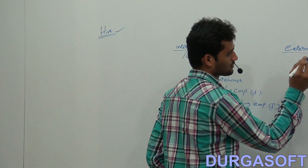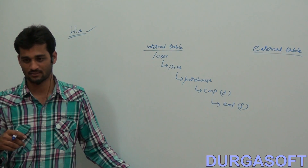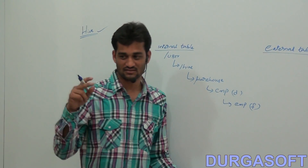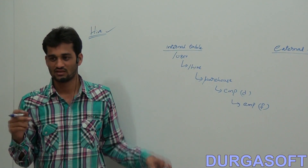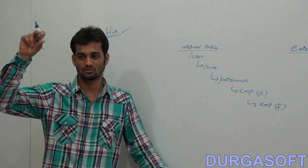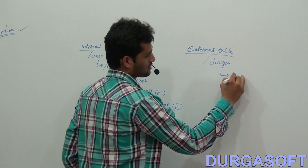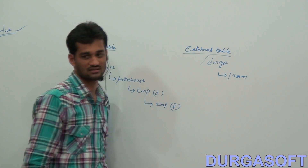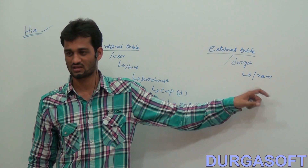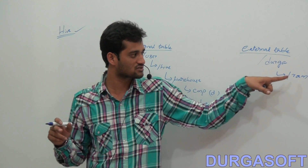Now for external table: when you create an external table — for example, create external table empl — you give a specific location such as /durga/ram. The table empl will not be created as a directory under warehouse. Instead, it just refers to that location /durga/ram. The table name directory will never be created under ram; it is simply referring to that location.